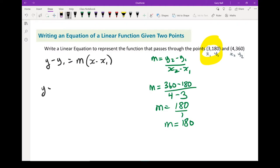y minus, now instead of a positive 180, I have to flip the sign. I'm going to go minus 180 equals my slope, which is 180 again. My x, which has to be there, minus x1 and x1 is minus 3. So it's going to be minus 3.